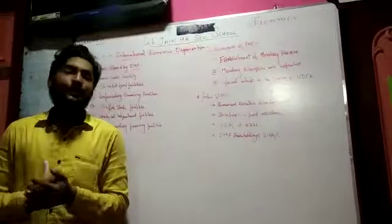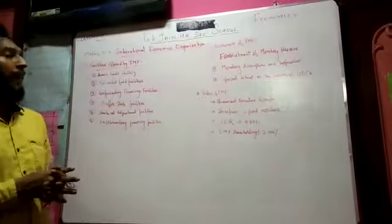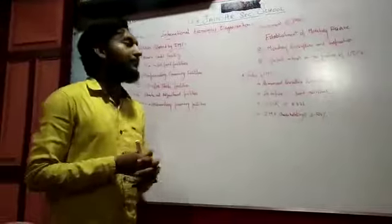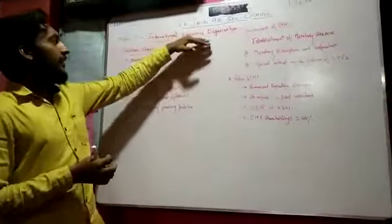Hello from J.K. James School. Today we are going to continue with the 8th chapter of Church Family Economics, which deals with the International Economics Organization.